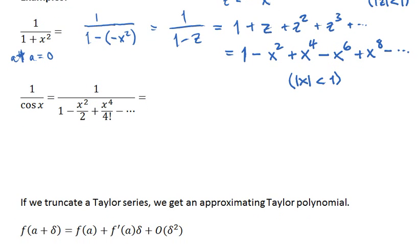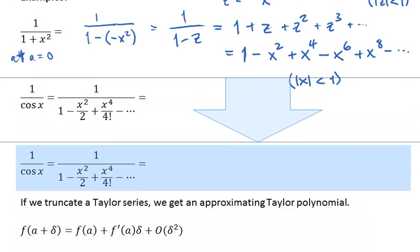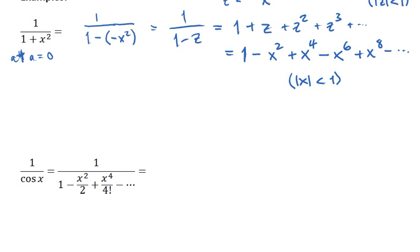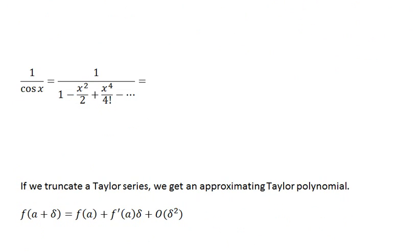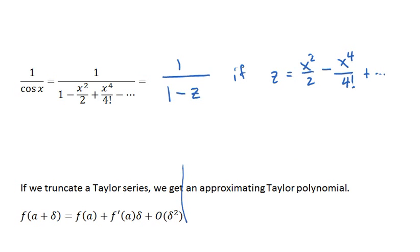Here's a more complicated example. Now we have 1 over a series. But in fact we can still look at this as though it's 1 over 1 minus z, if we define z as all that infinite stuff. You do have to remember that you factored out a minus sign from everything.